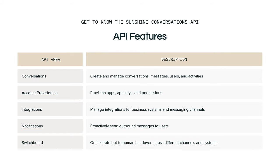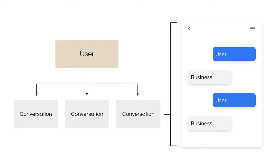In this introduction, we'll focus on the Conversations API. When a user reaches out to a business, Sunshine Conversations creates a conversation object. Each user can be mapped to multiple conversations. Each conversation contains messages from two parties — the user and the business. Messages from the user will be registered as user messages, and responses from the business will be registered as business messages.